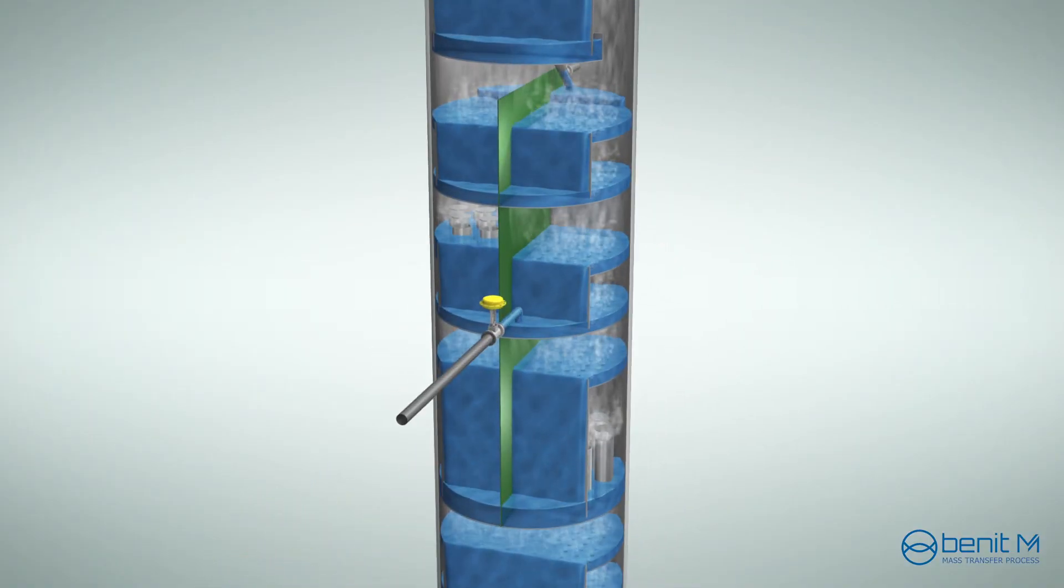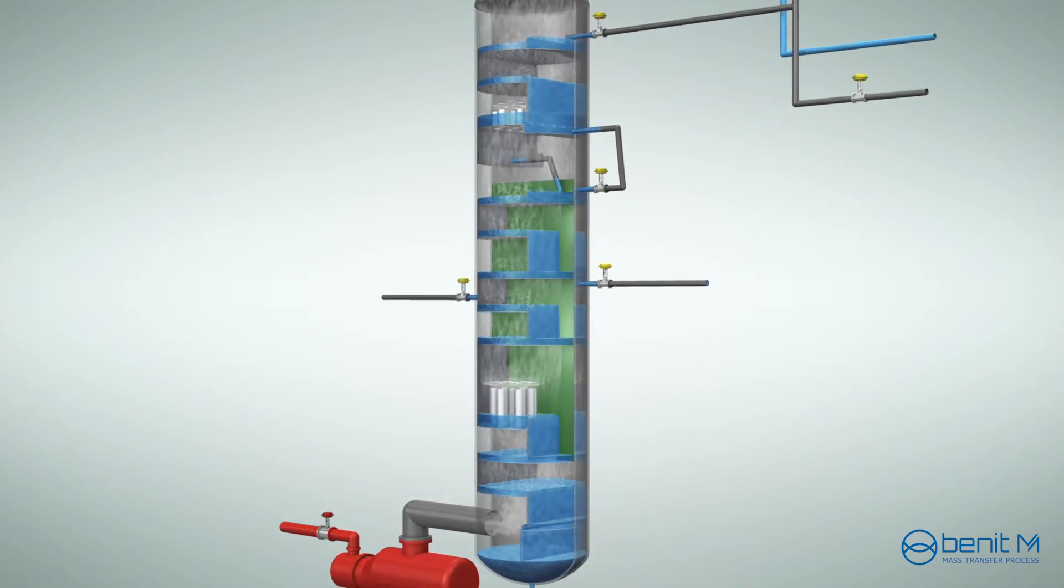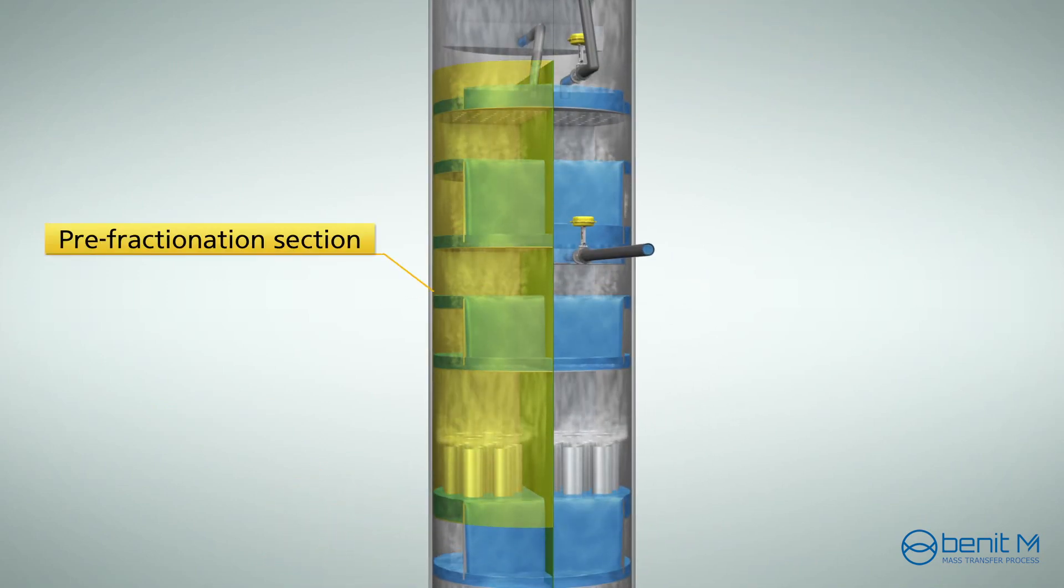The same as the common distillation column, a dividing wall column has a reboiler and a condenser. Generally, there are pre-fractionation section and main fractionation section.